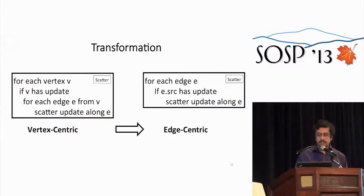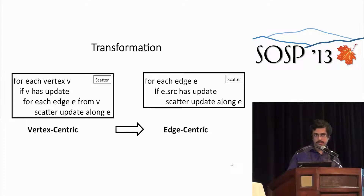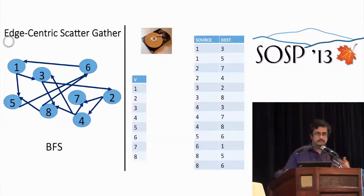Instead of iterating over vertices, we came up with a transformation: iterate over edges. In the edge-centric scatter step, for each edge E, if the source of the edge has an update, then we scatter an update along E. This edge-centric model makes scatter-gather far more storage friendly.